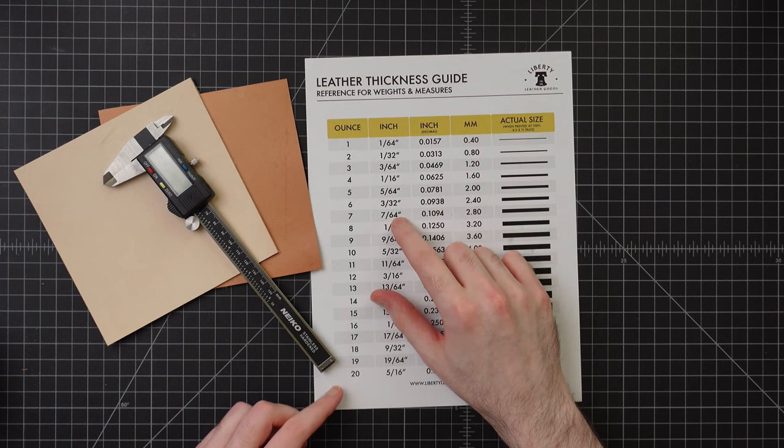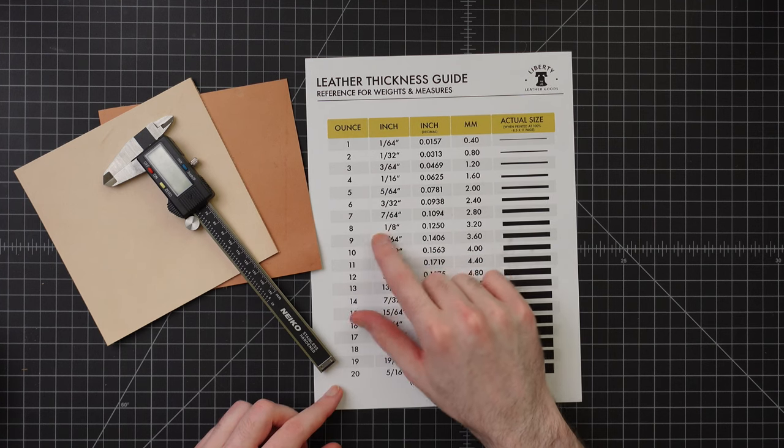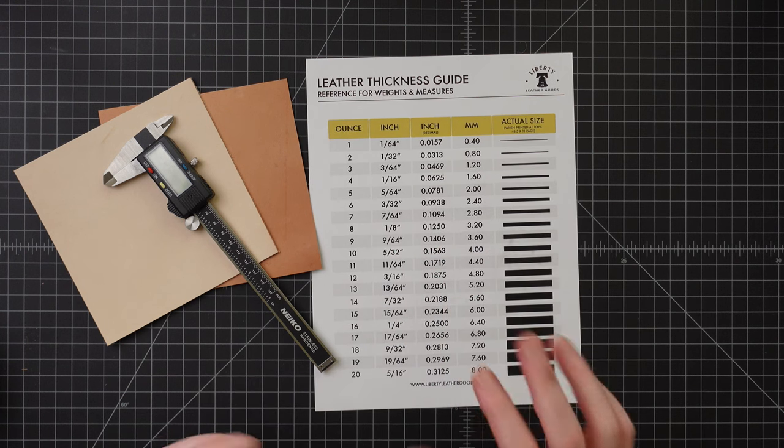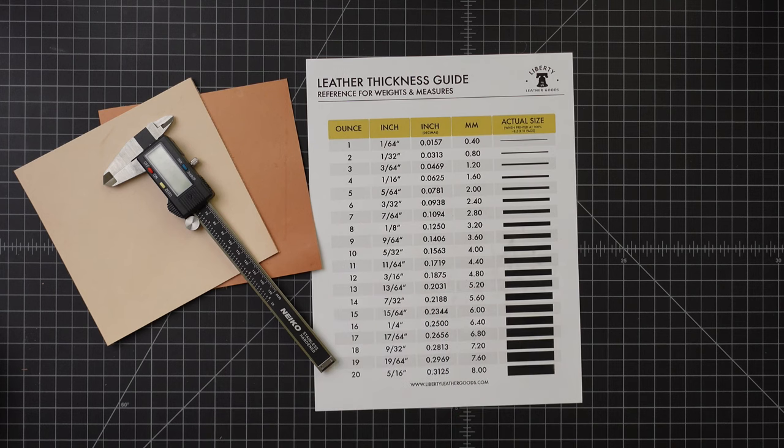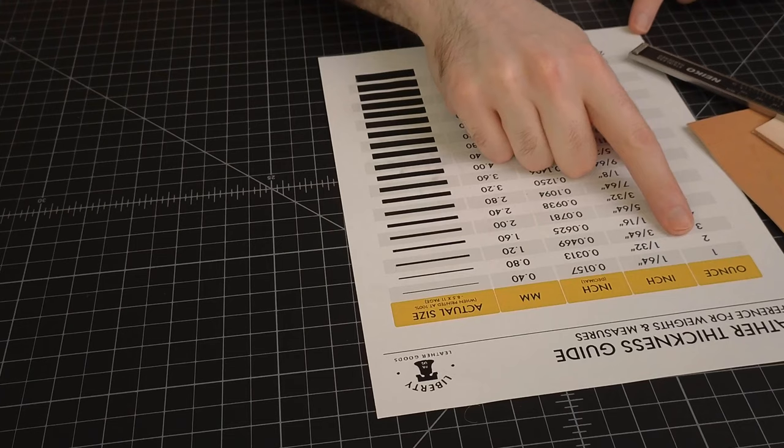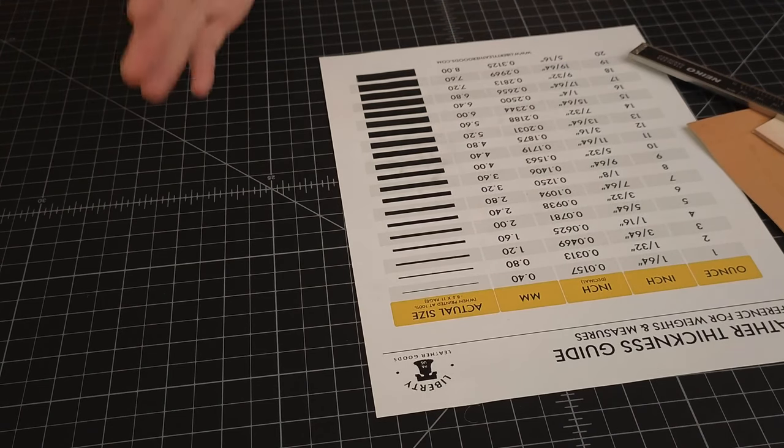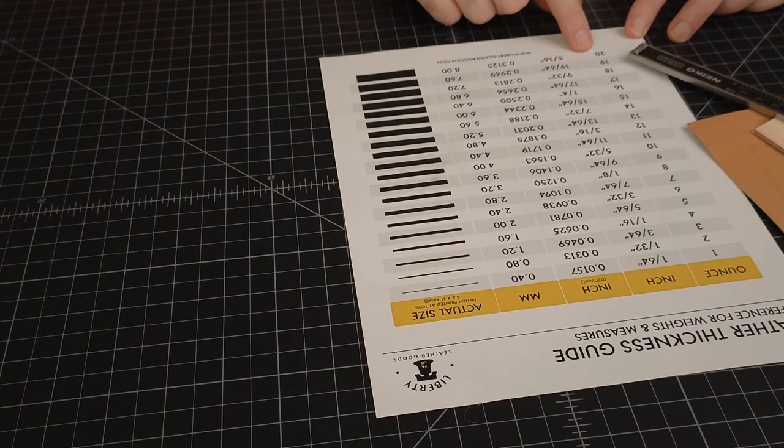Millimeters is based on the metric system used primarily around the world, and inches is used basically in America. We have the imperial system of feet, inches, pounds, and ounces. When we look at leather, we're going to be looking primarily at ounce, which is based on the thickness of the leather. The standard range of weights are primarily 1 to about 20 ounces.